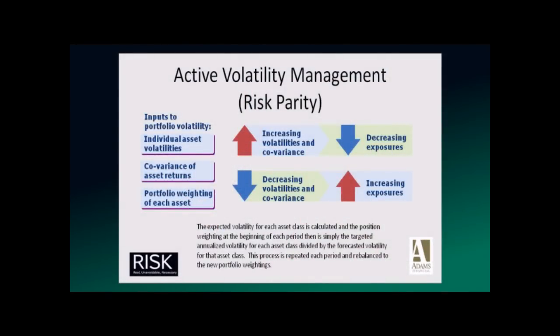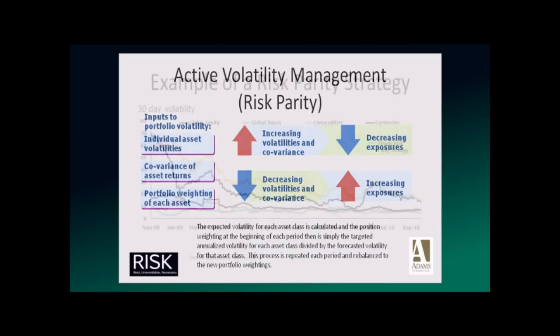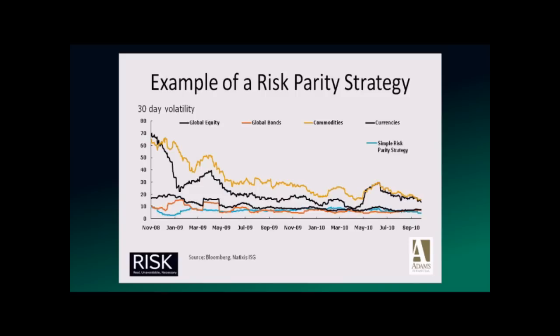The end result is something like what this chart shows. There's a group called Natixis that has been running a risk parity strategy institutionally for years, now available in retail accounts. They take global equity, global bonds from all countries and credit ratings, commodities, and currencies. You can see the day-to-day spikes in volatility — this isn't returns. The risk parity strategy, shown as the blue line, manages to keep volatility minimized. When you constantly move that fulcrum between asset classes, you can actually control volatility — you can't stop it, but you can tighten up the range.